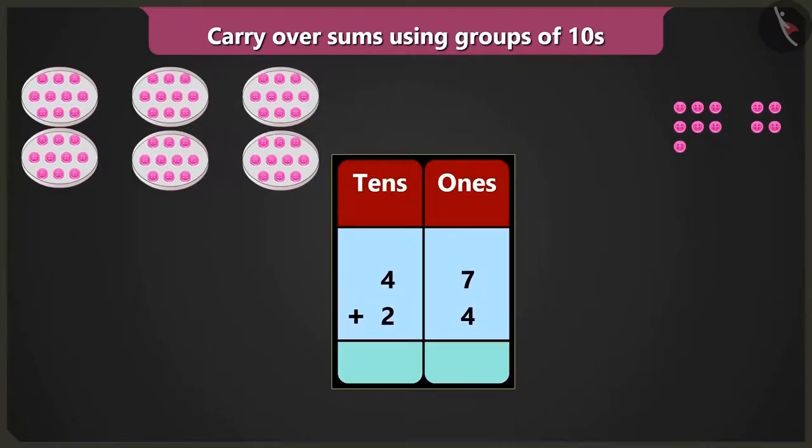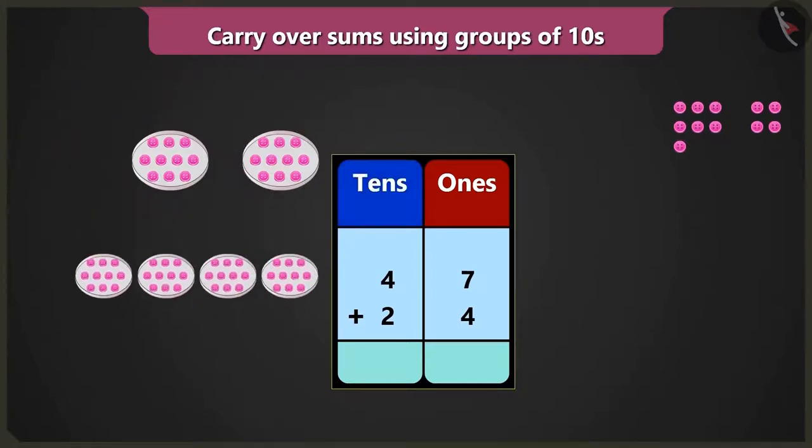Yes! 47 buttons, that are 4 tens and 7 ones. So we will write 4 in the box of tens and 7 in the box of ones.